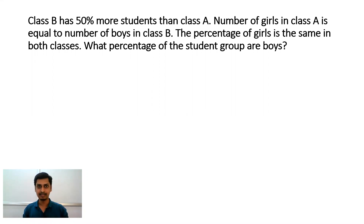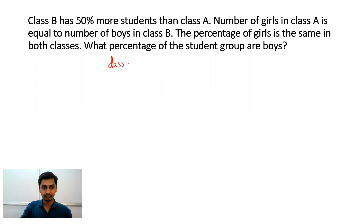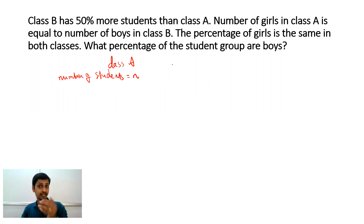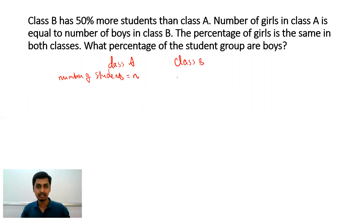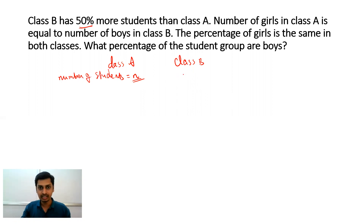Now we have two classes here — class A and class B. In class B, we have 50% more students compared to class A. So in class A, if we have n number of students, then the number of students in class B will be 150% of class A, because it is 50% higher. So it is n × 150/100, that is 1.5 times the number of students in class A.